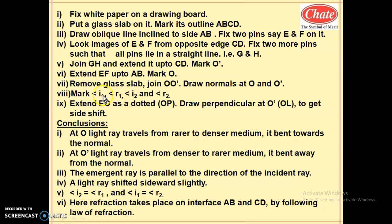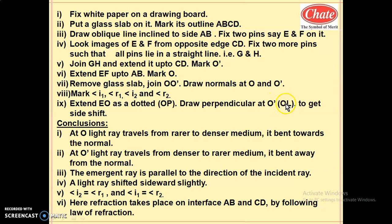Hence, two sets of IR (incidence-refraction) angles are used. Extend EO as a dotted line OP as shown in the diagram. Draw perpendicular at O dash — that is O dash L — to get the lateral shift, showing how much the path of the ray of light has shifted sideward.